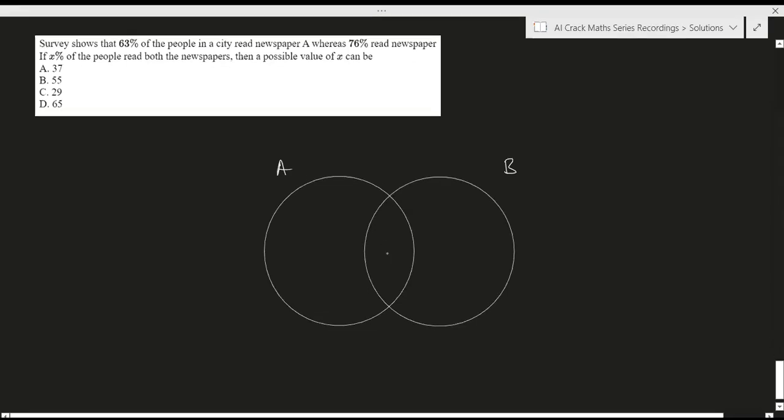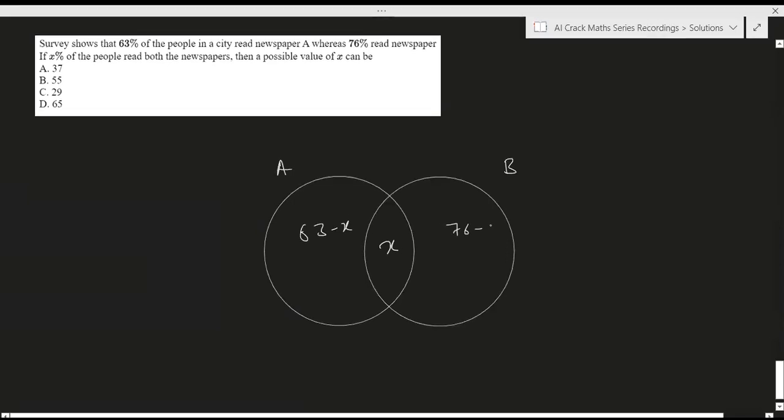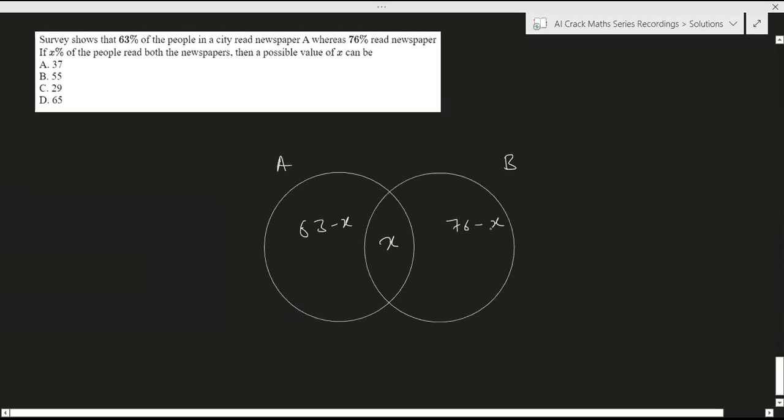Now we know that this common region is X percent as per the question. So basically this region would be 63 minus X and this would be 76 minus X. Because this entire region is 63, right, so if we exclude X, this would be 63 minus X and this would be 76 minus X.